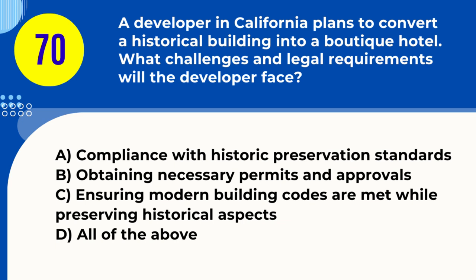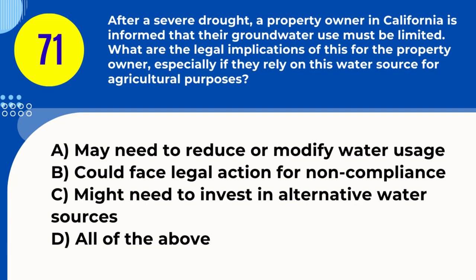Question 70. A developer in California plans to convert a historical building into a boutique hotel. What challenges and legal requirements will the developer face? A. Compliance with historic preservation standards B. Obtaining necessary permits and approvals C. Ensuring modern building codes are met while preserving historical aspects D. All of the above. Answer: D. All of the above. Explanation: Converting a historic building involves meeting preservation standards, obtaining permits, and complying with modern codes.